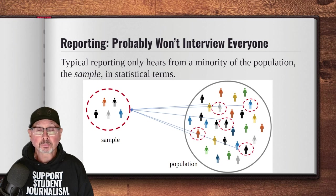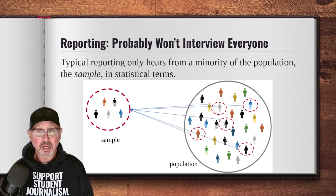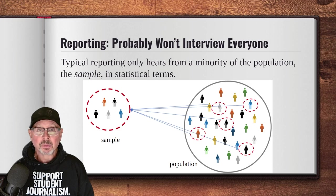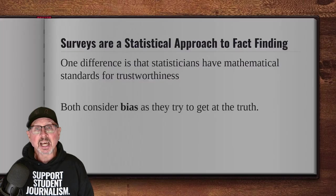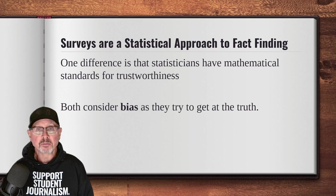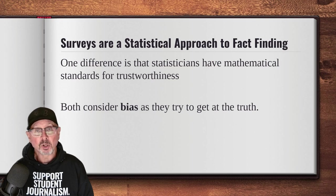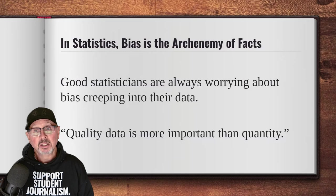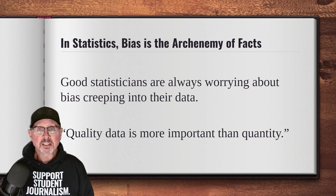Statisticians do something similar. They use two terms: population, which is the total group you're looking at, and sample, which is a subset of the population whom you survey. There's a parallel to the journalistic approach with the statistical approach. One big difference is that statisticians have mathematical standards for how trustworthy the information they find is. Bias is a big concept for both approaches — both recognize how bias can harm your ability to get to the truth. For statisticians, bias is the arch enemy of facts. Good statisticians are always worrying about bias creeping into their data and corrupting it.